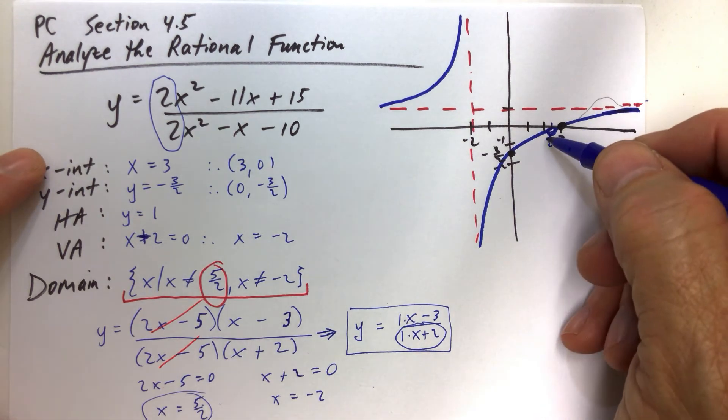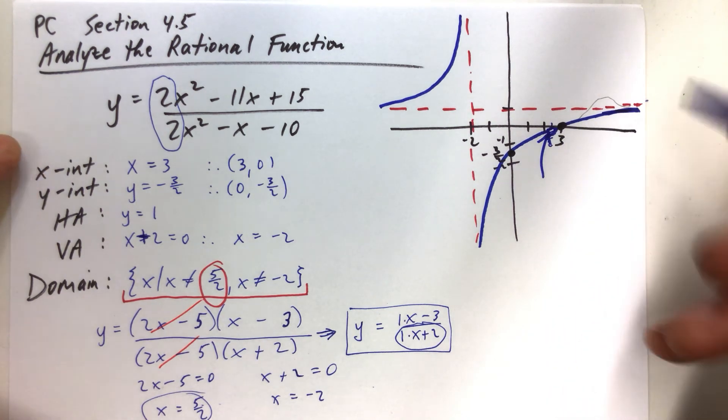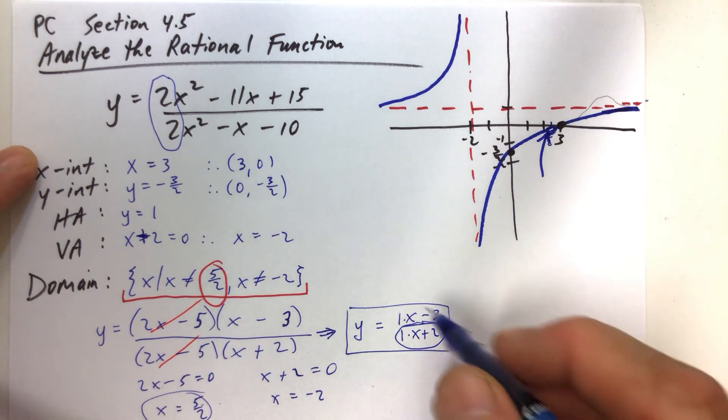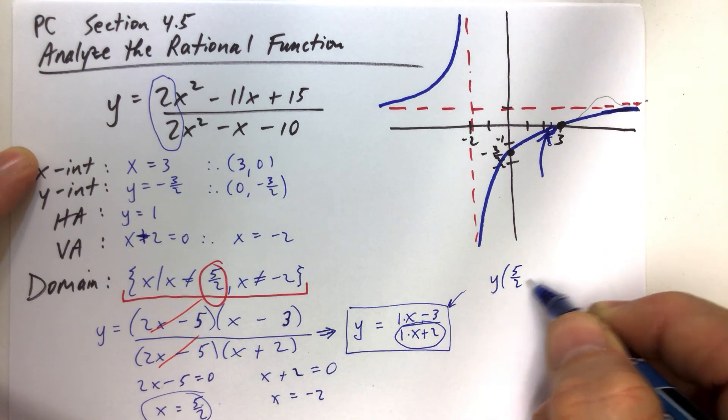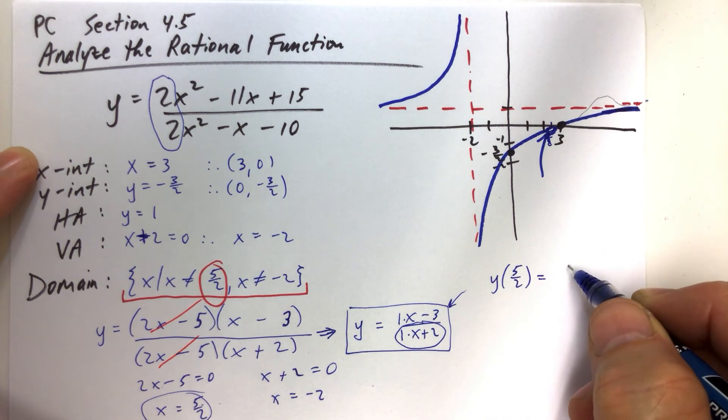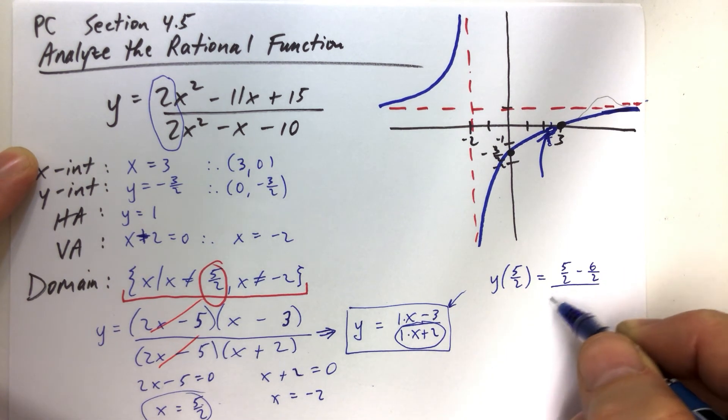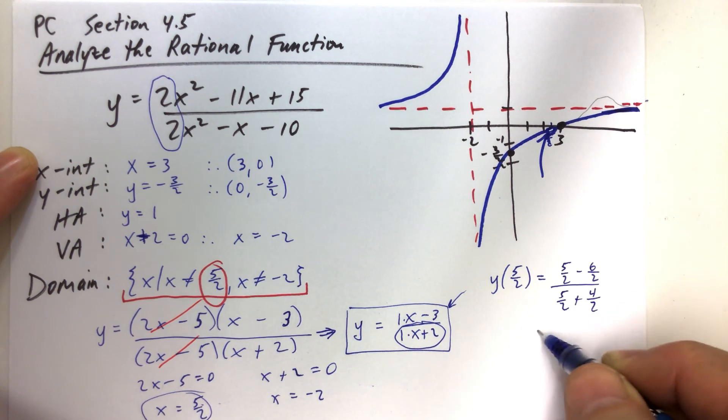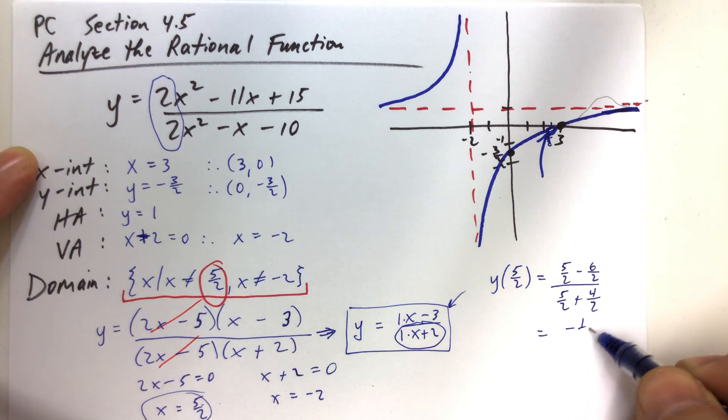Now, the last thing that would be kind of cool if you knew how to do is to find that y-coordinate of that hole. And to find the y-coordinate of the hole, you just figure out, well, what would the y-coordinate be if there wasn't a hole? And you would plug 5 halves into here. So if you replace x with 5 halves in the reduced form, you have 5 halves minus 3, and 3 is 6 halves. 5 halves plus 2, and 2 is 4 halves, just getting a common denominator there. So in the numerator, we have 5 halves minus 6 halves, that's negative 1 half.